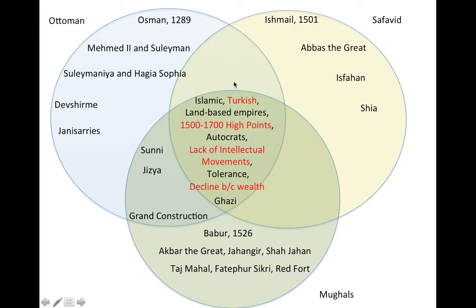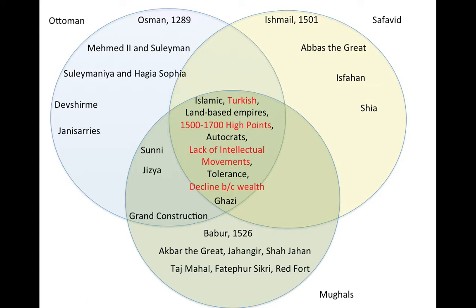The Ghazi were militant warriors found across all three empires. If you were a leader, you were given the title of Ghazi, meaning conqueror or warrior. These empires are nicknamed the Gunpowder Empires for a reason — they were powerful not just because they centralized their religious and political states, but because they were conquerors. The Safavid had the hardest time because they were in a two-front war fighting the Ottomans to the west and the Mughals to the east. They struggled to take more territory but still expanded northward.